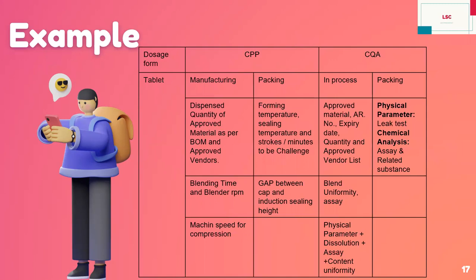Example in the case of a tablet: manufacturing — dispense quantity of approved material as per BOM and approved vendor; blending time and blend uniformity; machine speed for compression. The CQAs are: approved material, AR number, expiry date, quantity and approved vendor list, blend uniformity assay, physical parameters, dissolution, assay, and content uniformity. Then for packing: forming temperature, sealing temperature or dwell time in seconds to be challenged, gap between cap and induction sealing height. CQAs: physical parameters, leak test, chemical test, assay, related substances. These are the CPPs and CQAs, and you have to give a rationale for how you decided them and their relationship. Make a risk assessment and rationale for all of this, and ensure this is available in your document.